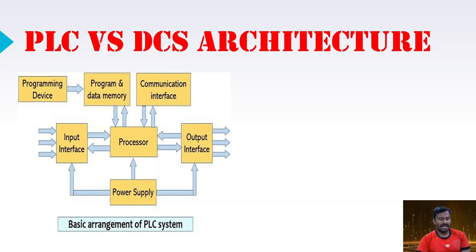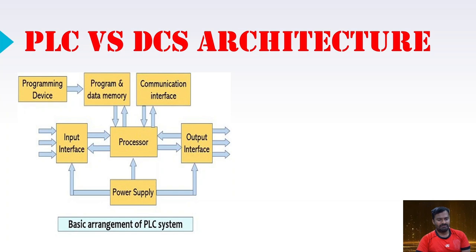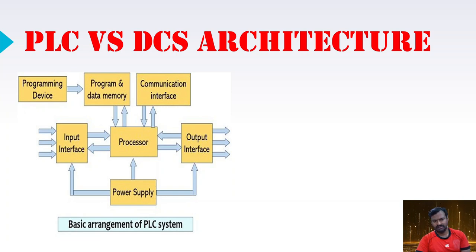The PLC operates through an input scan, then program scan, then output scan. This process is very fast and accurate, and it can connect hundreds of input and output devices, mostly discrete in nature.